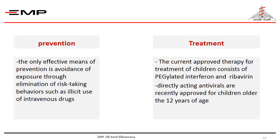The only available method of prevention is avoidance of exposure to risk factors. The current approved therapy for treatment of children consists of pegylated interferon and ribavirin. Directly acting antivirals are recently approved for children older than 12 years of age.